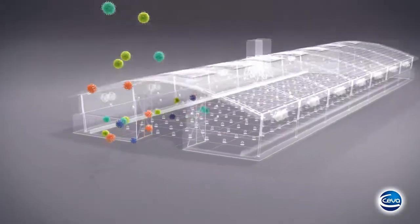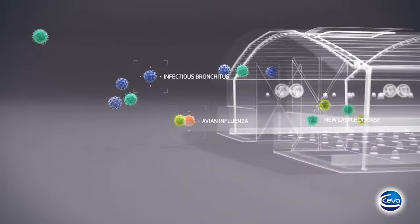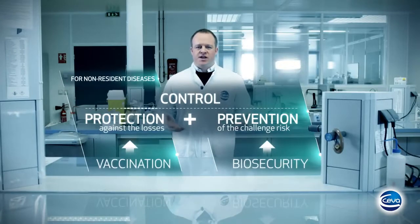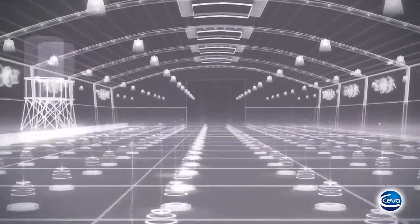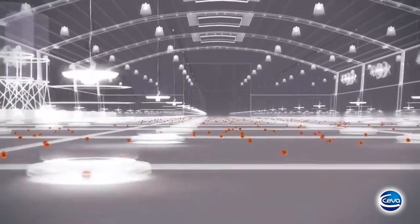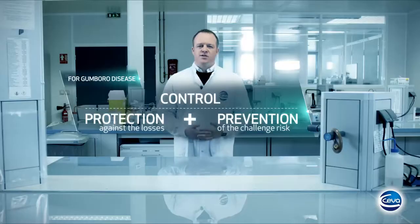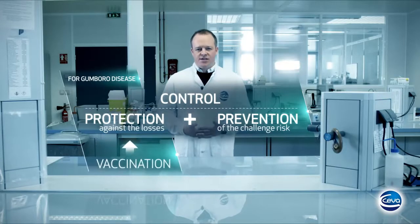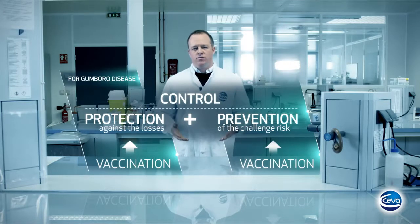For non-resident diseases, which are the ones coming from outside the poultry farms — such as Newcastle disease, avian influenza, and infectious bronchitis, amongst others — the protection comes from vaccination, which makes the chickens more resistant to the infection. Prevention, however, comes mainly from biosecurity measures. In the case of Gumborough disease, the causative virus is almost always present inside the farm in the litter, so vaccination should aim at both protecting the chickens from the losses produced by the infection and preventing the challenge risk from getting out of control.